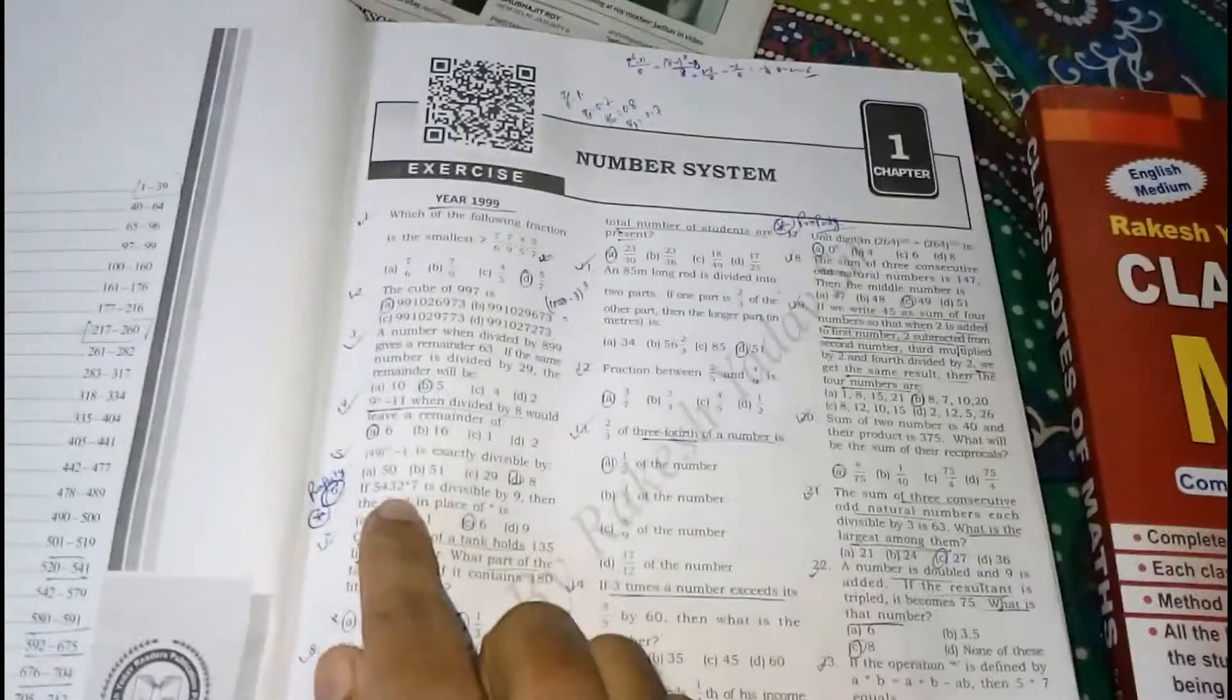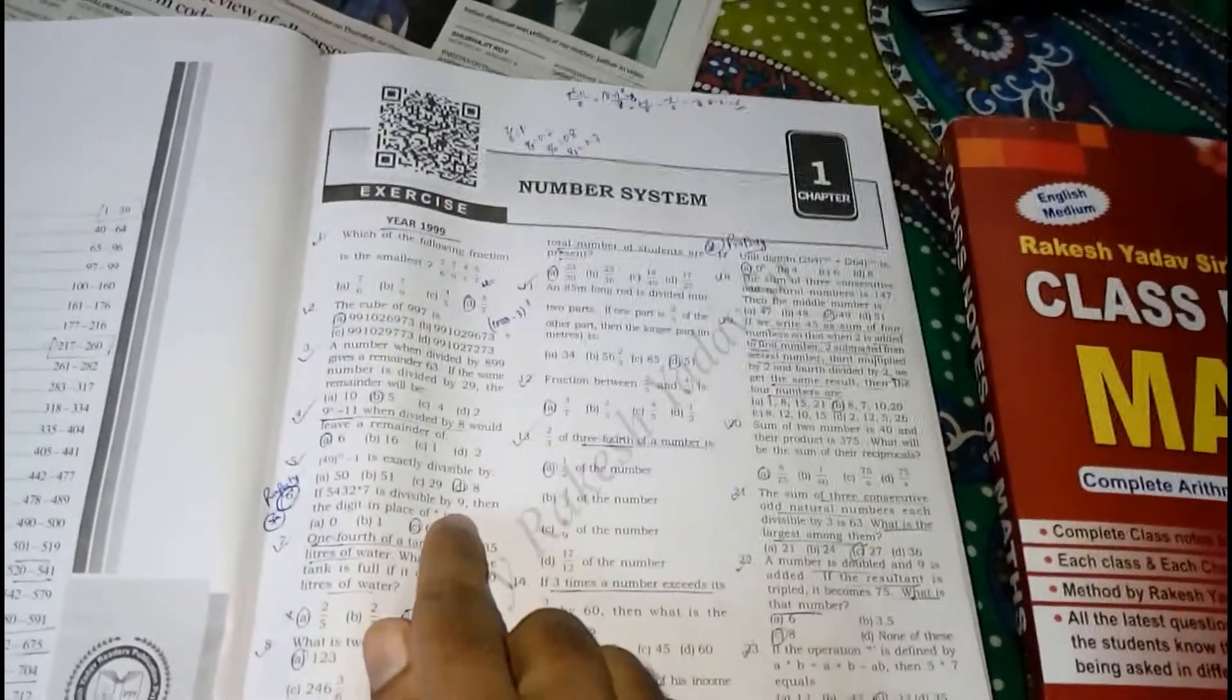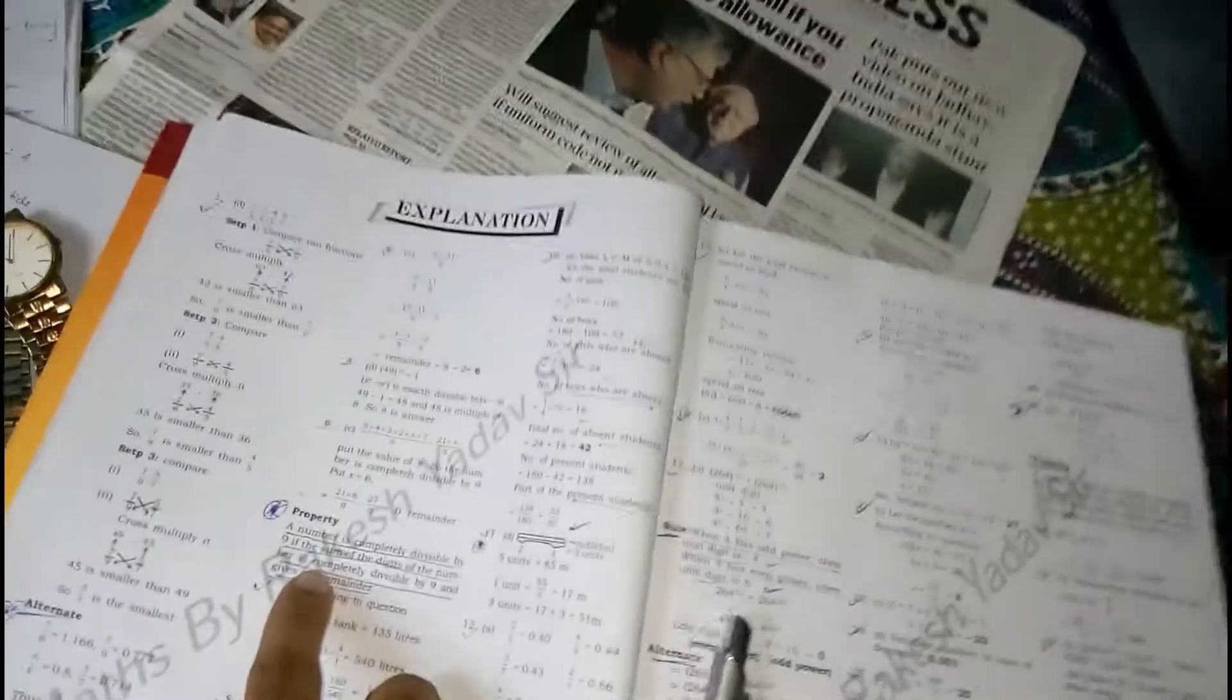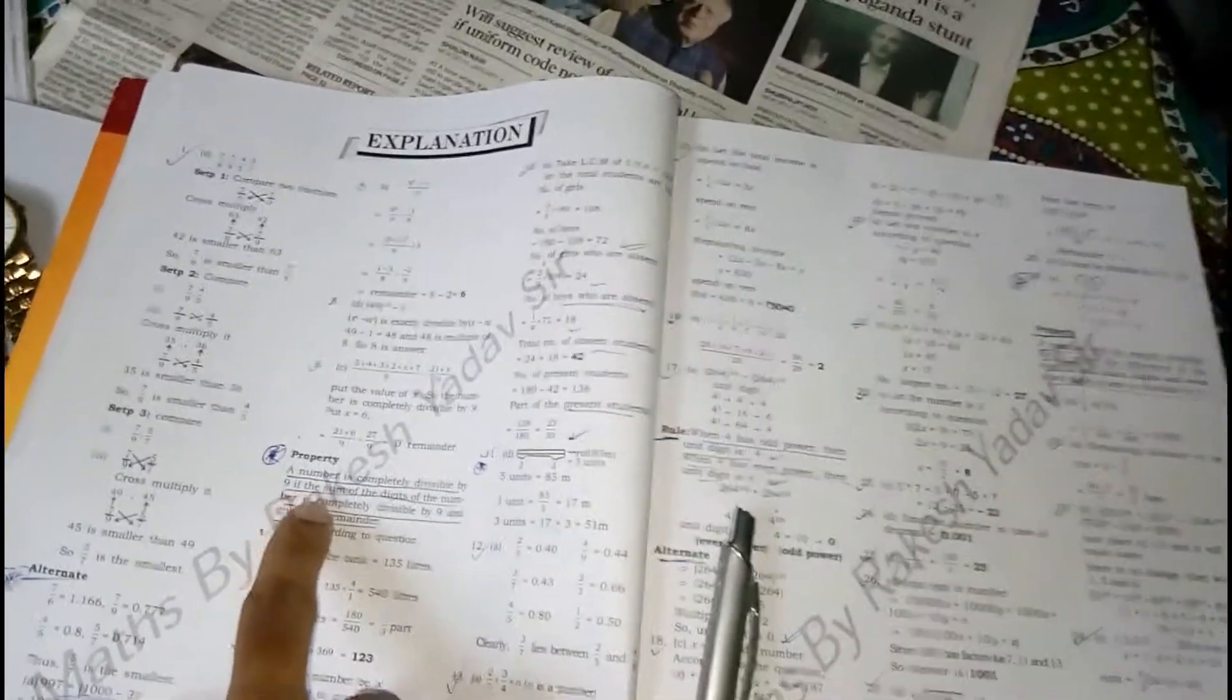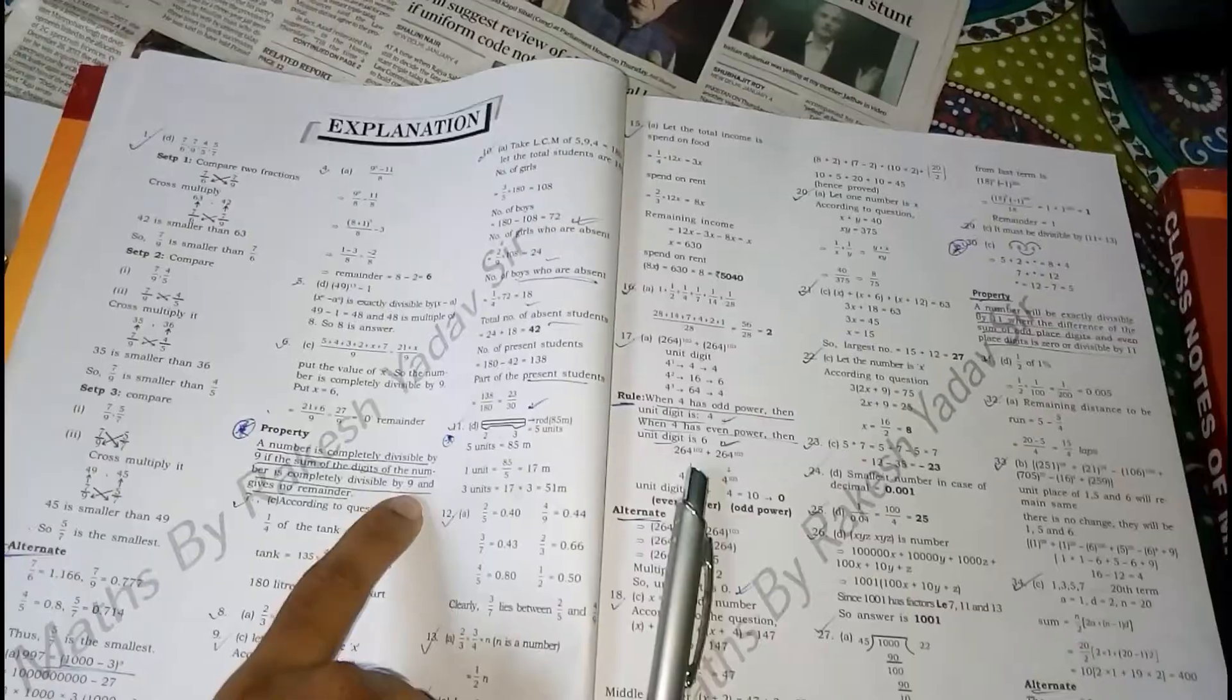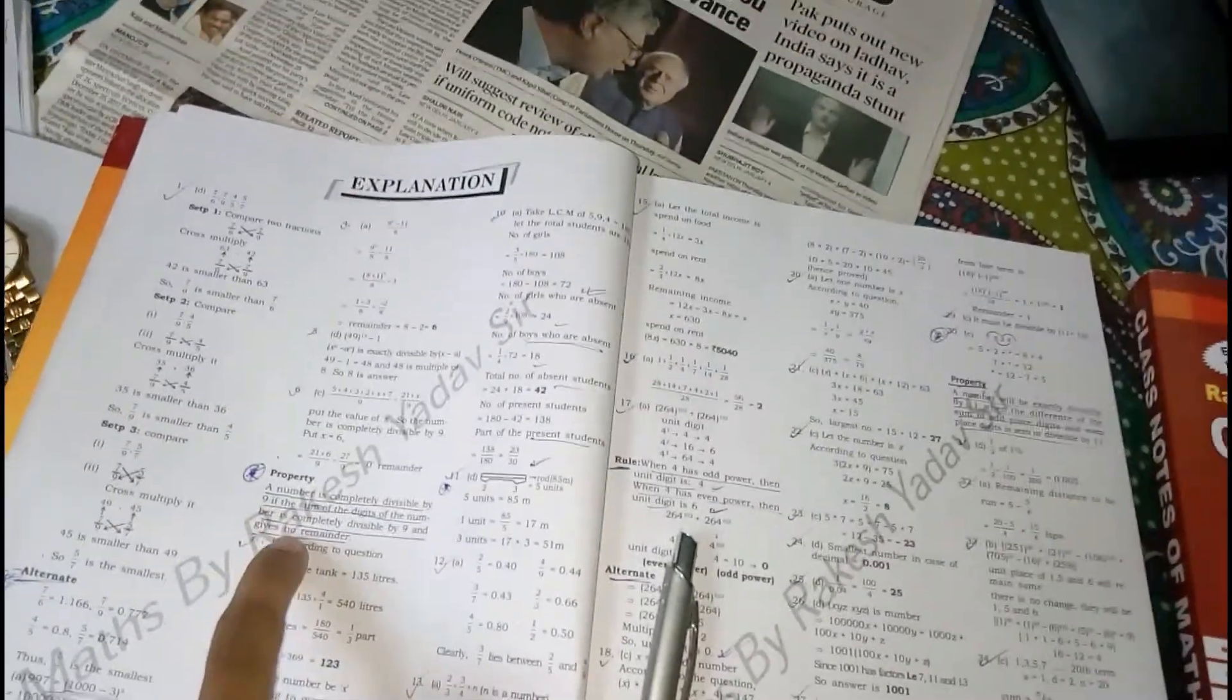Then the property. As you can see in the question number six, if I move to question number six here, the question states if 5432 into 7 is divisible by 9 then the digit in place of star is what. You can see in explanation part sir described about the property. The property is a number is completely divisible by 9 if the sum of the digits of the numbers is completely divisible by 9 and gives no remainder.